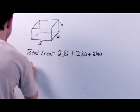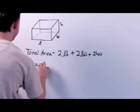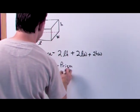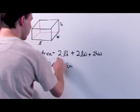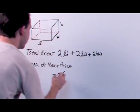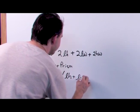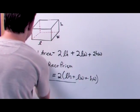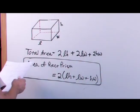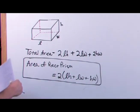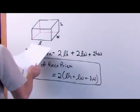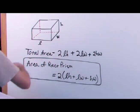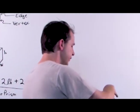So you can rewrite this — the area of the rectangular prism — by pulling out the two: it equals two times, in parentheses, LH plus LW plus HW. That's the area of a rectangular prism. All you need to do is label the length, width, and height, and make sure you're using the right numbers in the right spots in this equation and you will get the right answer.